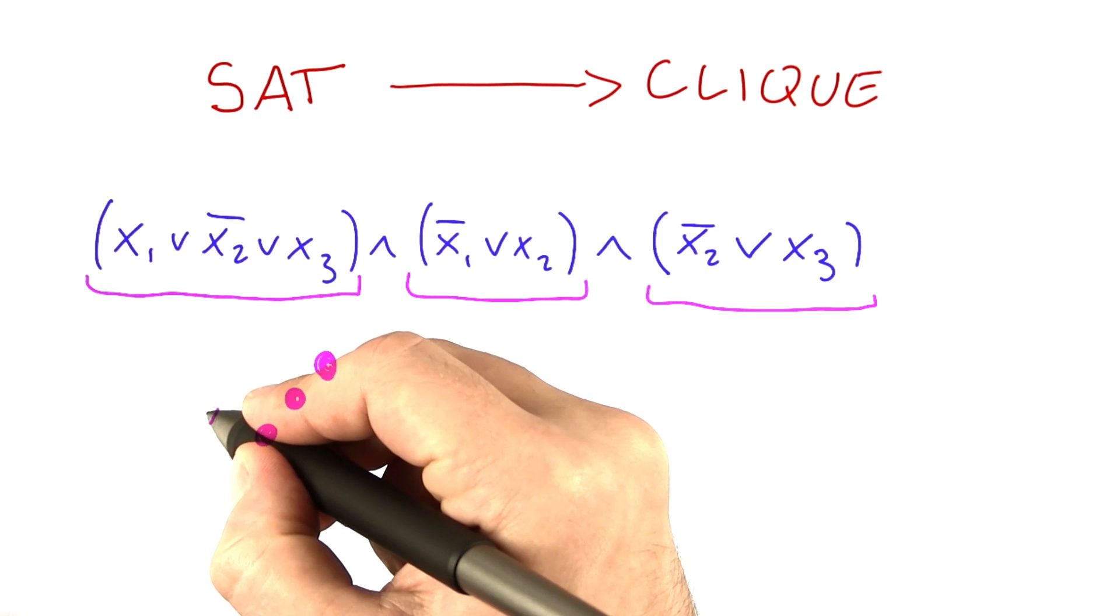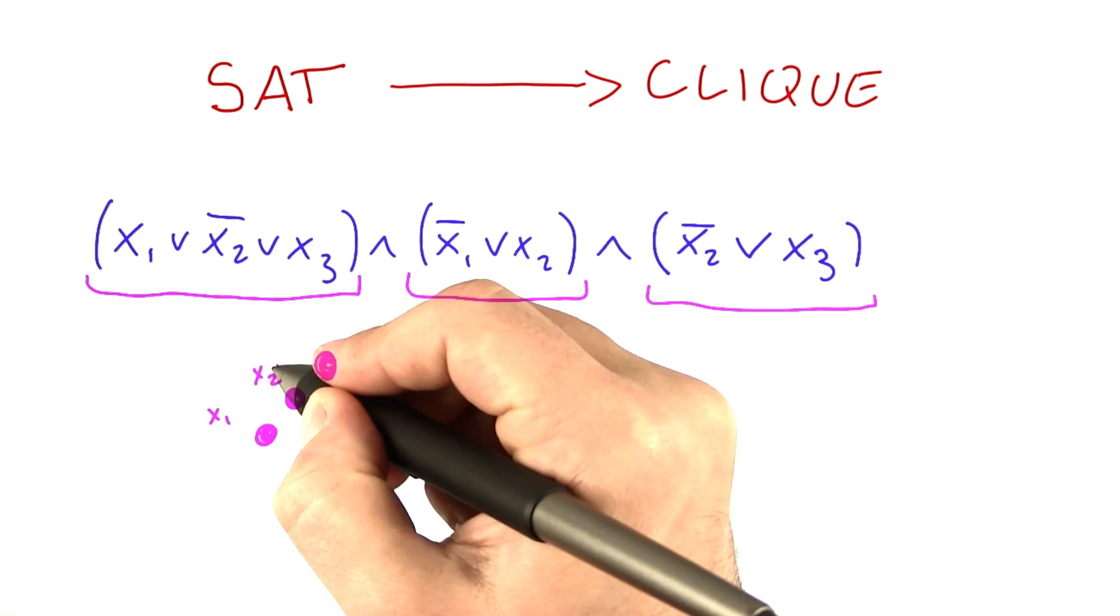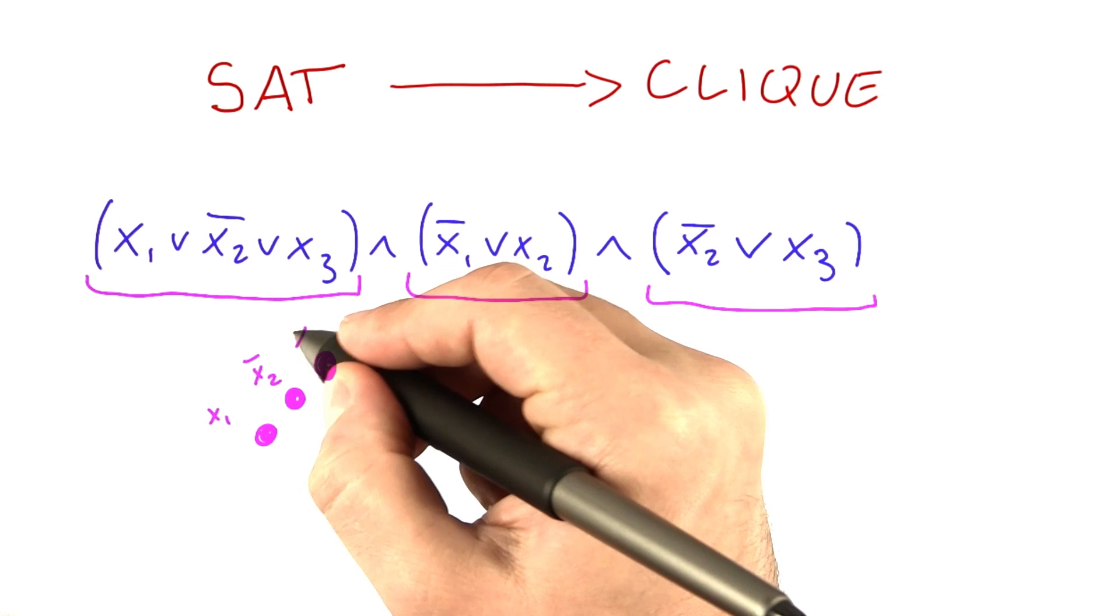So this vertex here is for the x1. This vertex here is for the not x2. This one here is for the x3.